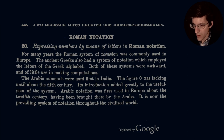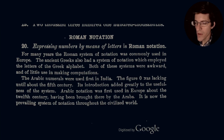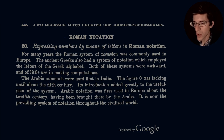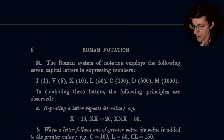Let's go ahead and read what the textbook says. Expressing numbers by means of letters in Roman notation. For many years, the Roman system of notation was commonly used in Europe. The ancient Greeks also had a system of notation which employed the letters of the Greek alphabet. Both of these systems were awkward and of little use in making computations. The Arabic numerals were used first in India. The figure zero was lacking until about the 5th century. Its introduction added greatly to the usefulness of the system. Arabic notation was first used in Europe about the 12th century, having been brought there by the Arabs. It is now the prevailing system of notation through the civilized world.